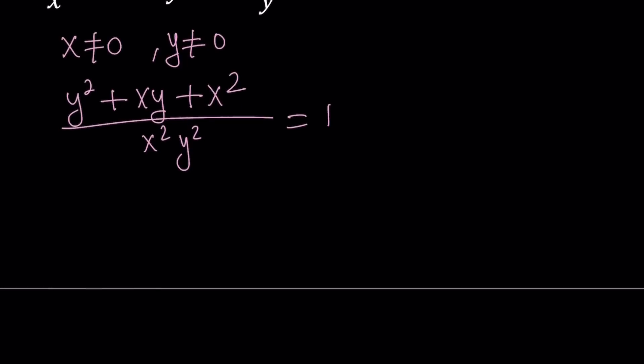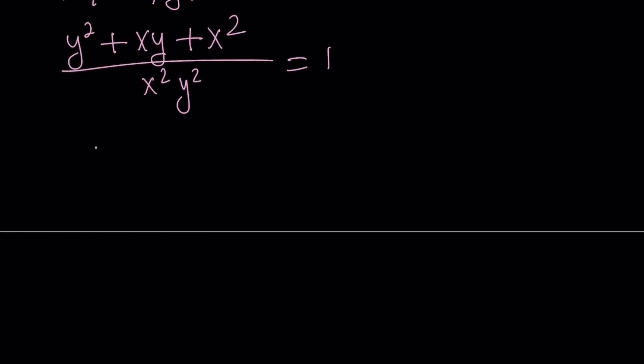Now if you go ahead and cross multiply, notice that x and y are different from 0, so it's okay to do. And let's write the x squared first. So this turns into x squared plus xy plus y squared equals x squared times y squared.